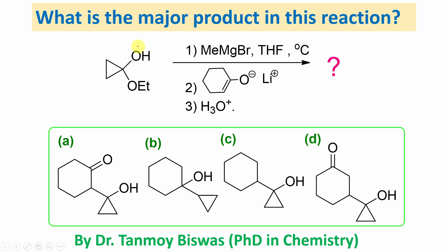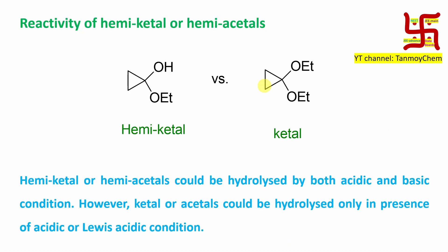We have tried, so let's start. What is the major product of these reactions? This is actually a hemiketal. It's stepwise: first step with Grignard reagent, second step with this enolate, third step is workup. What is the major product of this reaction? Before going into the details, let's learn a little about the hemiketal and this enolate — that will help you understand the mechanism better.